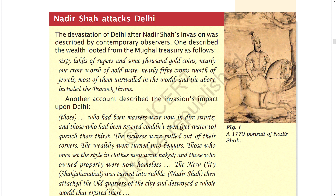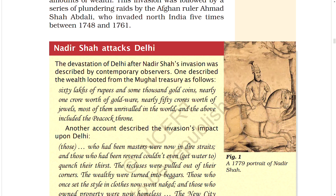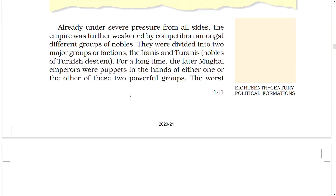Another account described the invasion's impact upon Delhi: 'Those who had been masters were now in dire straits. And those who had been revered could not even get water to quench their thirst. The wealthy were turned into beggars. Those who once set the style in clothes now went naked. And those who owned property were now homeless. The new city Shahjahanabad was turned into rubble.' A 1779 portrait of Nadir Shah accompanies this account.